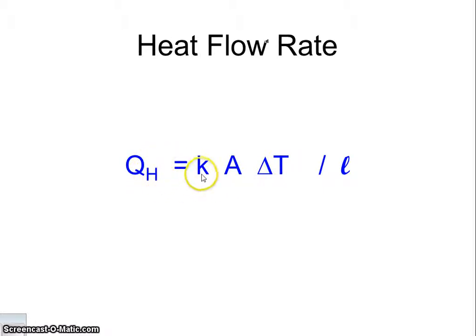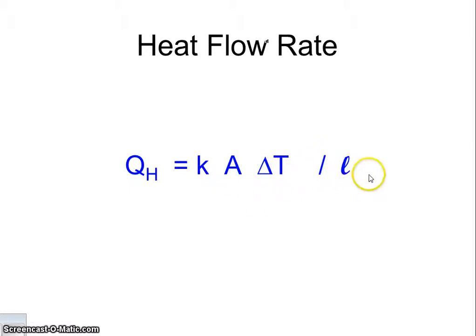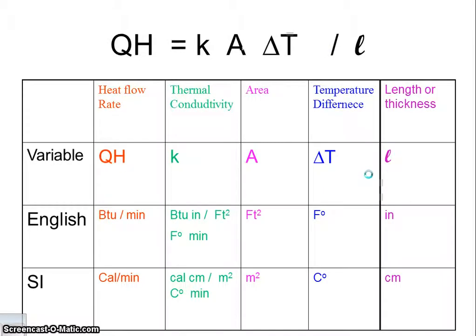Here's the formula — we've seen this one before from the last unit. Your heat flow rate equals K, which is thermal conductivity, times A, which is area, times your change in temperature, divided by L, which is thickness. We have our variables and units here — this is just a review.